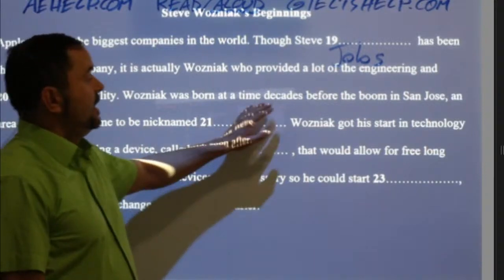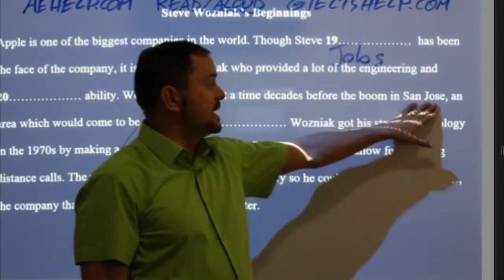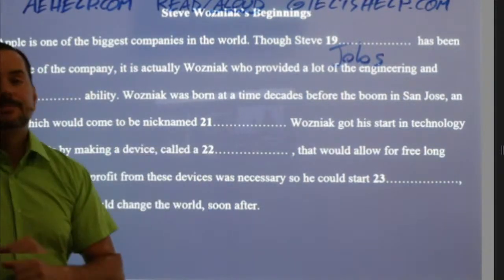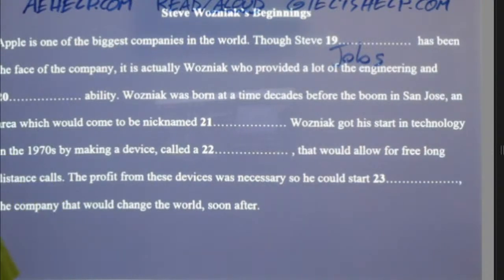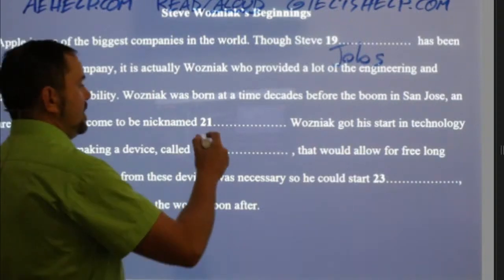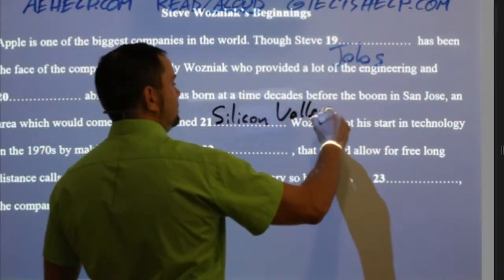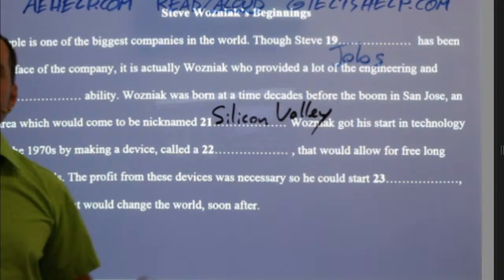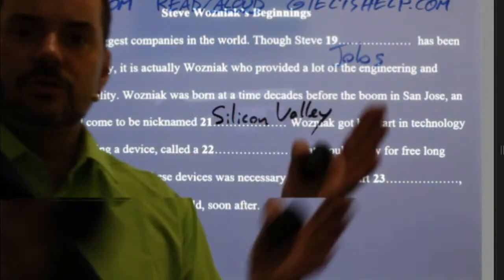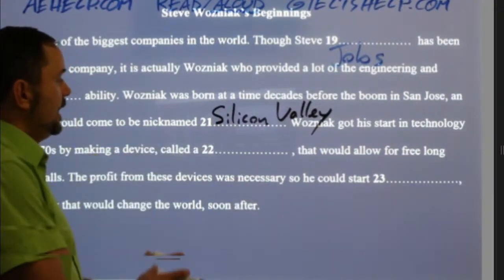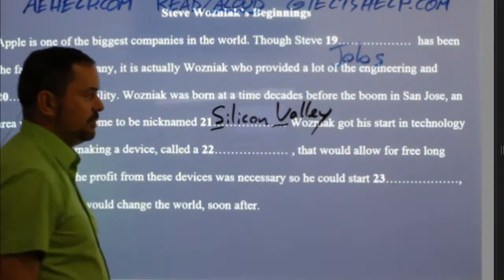Wozniak was born at a time, decades before the boom in San Jose, an area which would come to be nicknamed — what? Bekjan says Silicon Valley. And again you can check that spelling if needed. Valley is the area between two mountain ranges. Silicon is spelled S-I-L-I-C-O-N. It's a name, so big S, big V — very important.